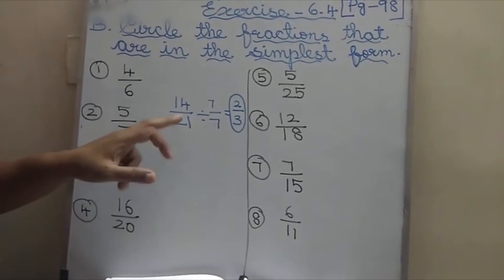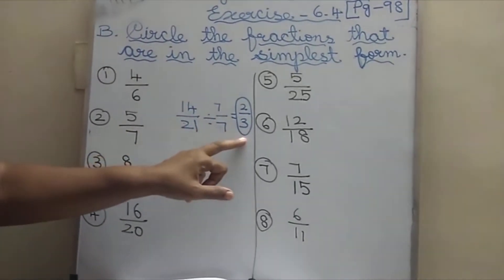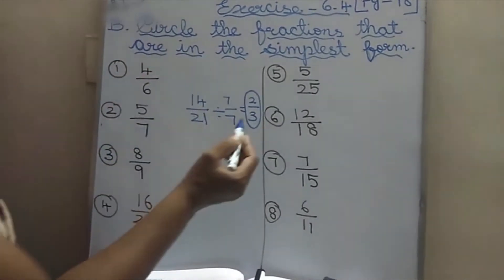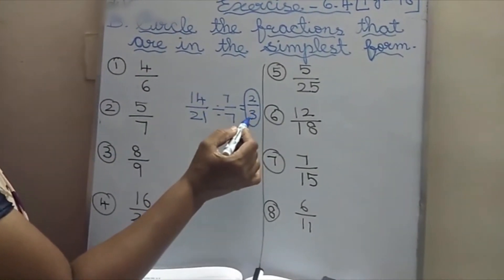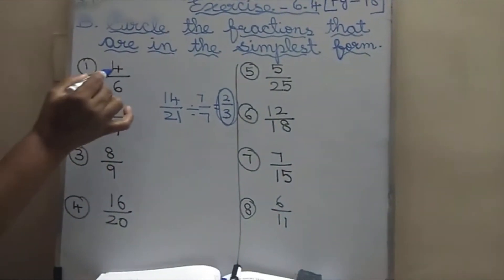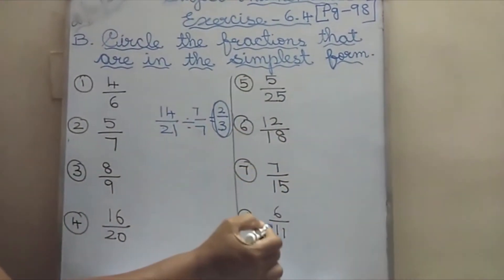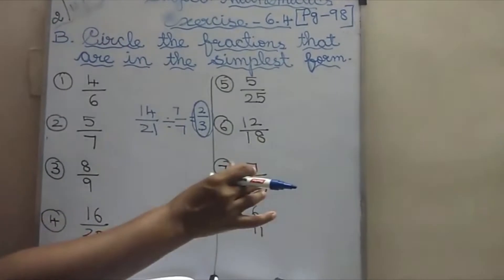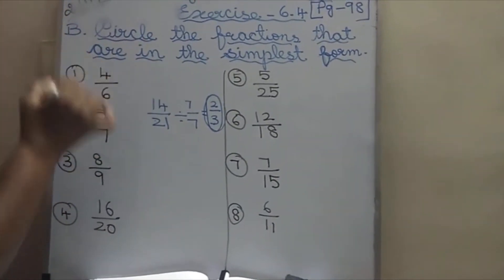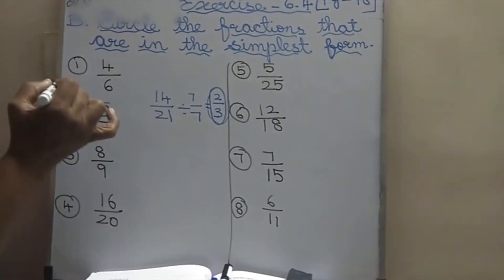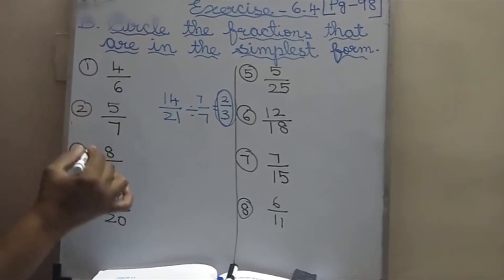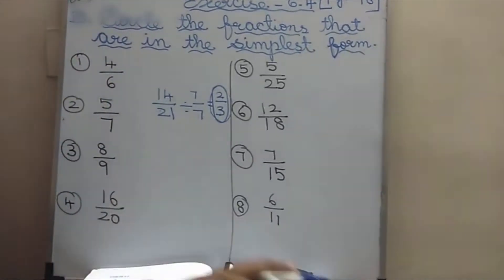Here they have given some sums. What we have to do? We have to find out which is the simplest form and we have to circle it. What are the simplest forms — we have to find out and circle them.